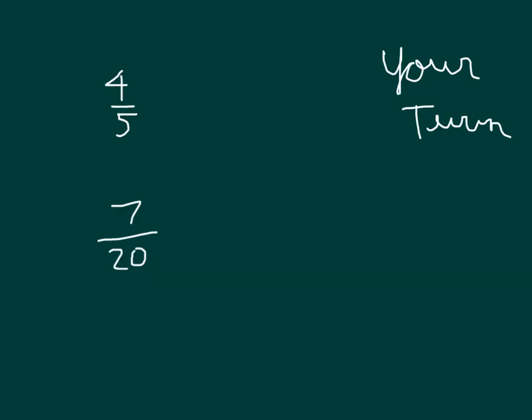Here are two problems for you to try. Go ahead and find the decimal equivalent for each. Show your work. The first one you could choose to multiply by 2 over 2, which would give you 8 over 10. That's 8 tenths, which is also equal to 0.8.